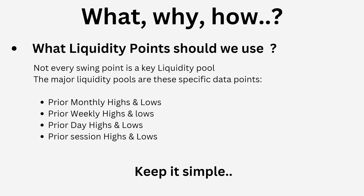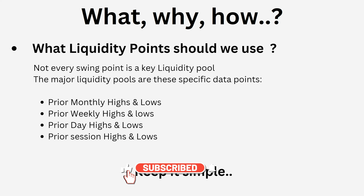Not every single swing point is a key liquidity pool. The major liquidity pools are these specific data points. How many times do you guys see people say 'oh look at the buy side liquidity, look at the sell side liquidity' and they're just pointing to a random high or a random low? It's very important to understand that there are key points of liquidity: the prior month highs, the prior weekly highs and lows, the prior day highs and lows, and the prior session highs and lows. Keep it simple - it really is this simple.